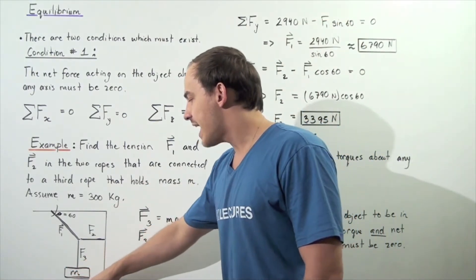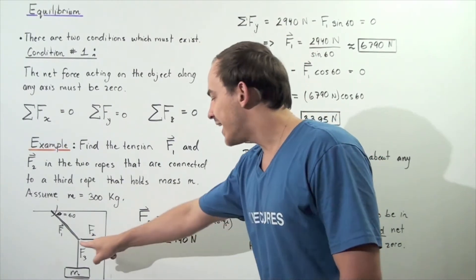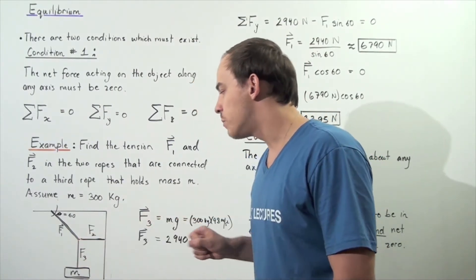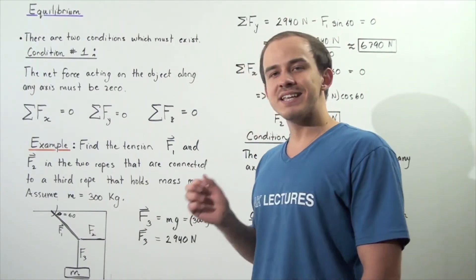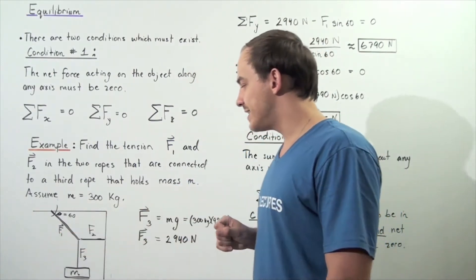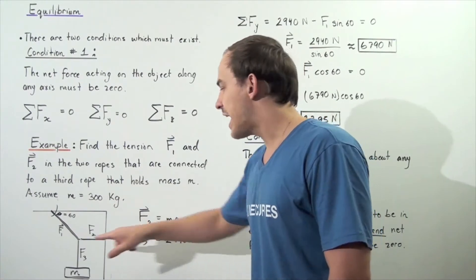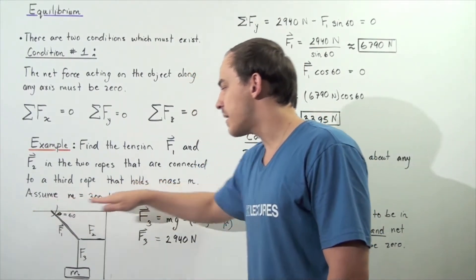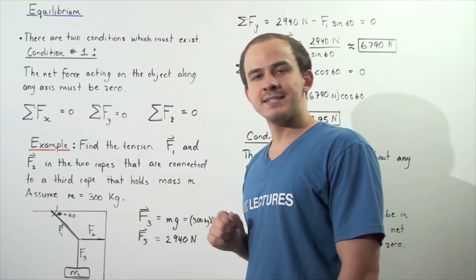So let's look at our diagram. We have mass M, which is 300 kilograms, hanging by the following vertical rope force F3. So the tension in this rope is F3. We want to calculate what F1 is and F2, knowing that the angle that force 1 makes with respect to the x-axis, with respect to the ceiling, is 60 degrees.